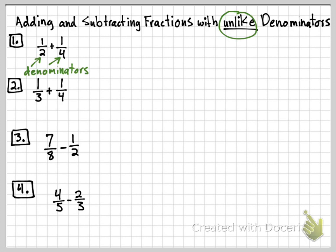I'm going to multiply it by two — multiply the bottom by two. And a rule: when you're multiplying the bottom by a number, you have to multiply the top by that same number. So the first part of this fraction, the one-half: two times one becomes two, and the bottom, two times two becomes four.